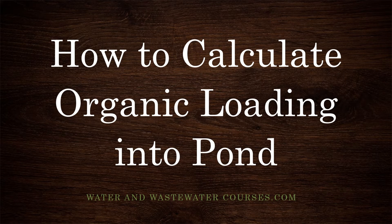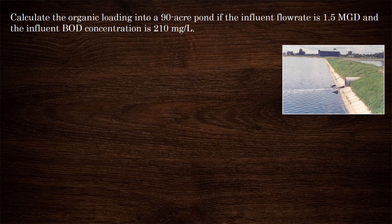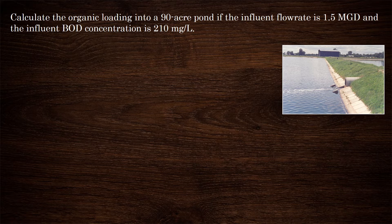In this video, we're going to learn how to calculate organic loading into a pond. Calculate the organic loading into a 90-acre pond if the influent flow rate is 1.5 mgd and the influent BOD concentration is 210 mg per liter.